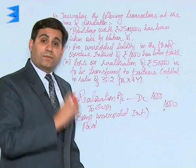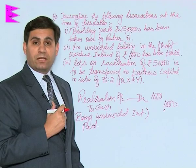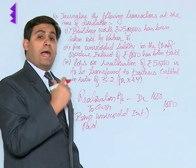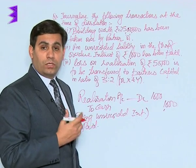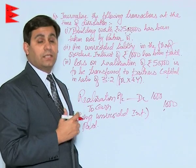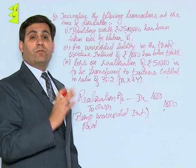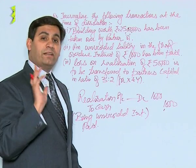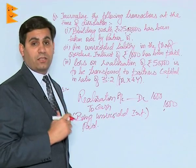It was an unrecorded interest, meaning it was not there in the balance sheet. Since it was not in the balance sheet at the time of dissolution, when you went to the bank to pay your loan, the bank asked for an additional payment of rupees 1000 on account of interest. This interest was not in the balance sheet, so it was not transferred to the realization account earlier. Therefore, only one entry is sufficient — the entry for payment, which is realization account to cash.